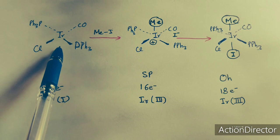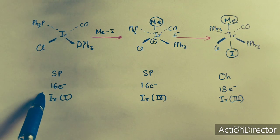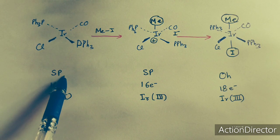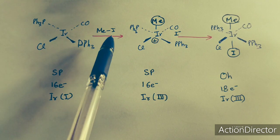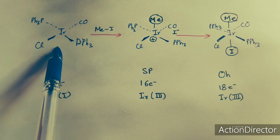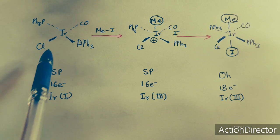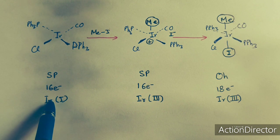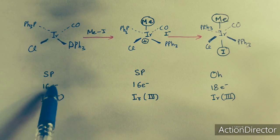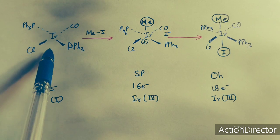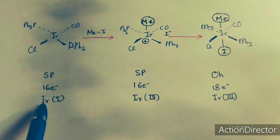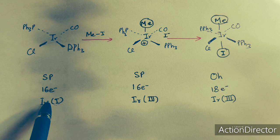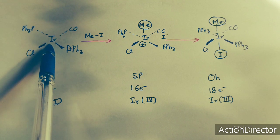An example is the Vaska complex, where iridium is in its first oxidation state. It is a 16-electron, square-planar complex. Methyl iodide is a polar species. When it adds to this 16-electron Ir(I) system, the metal may be coordinatively unsaturated but it is electron rich. With oxidation state +1, it should be and is an electron-rich species.